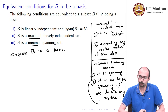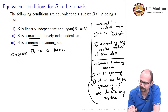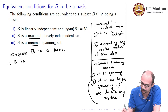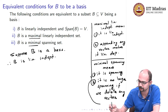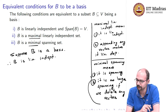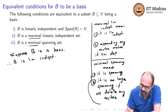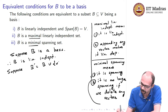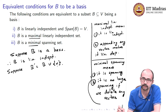Suppose it is a basis — why is it a maximal linearly independent set? Since it is a basis, we already know it is linearly independent. So we have to just check that if you append any vector, then that makes it linearly dependent. Suppose B prime is B union vector v. Well, v is already in the span of B because B is a basis, meaning B is a spanning set.